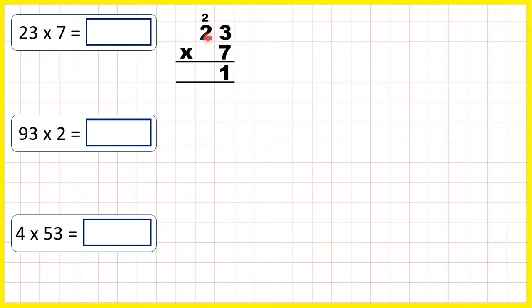Then onto our tens digits. 2 times 7 is 14, but then we need to add this 2 on top. So 2 times 7 is 14, plus 2 is 16, so our answer is 161.